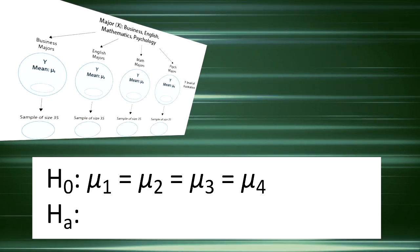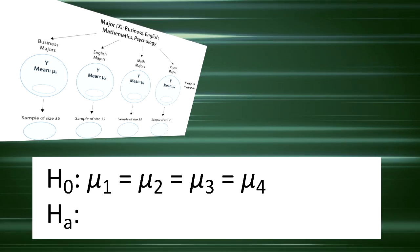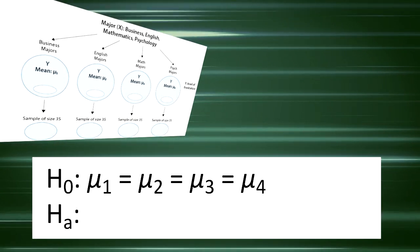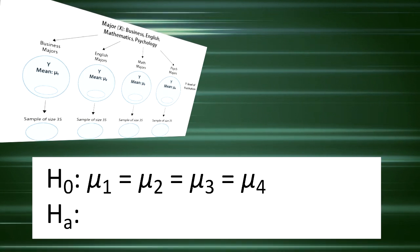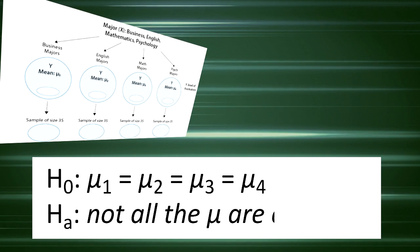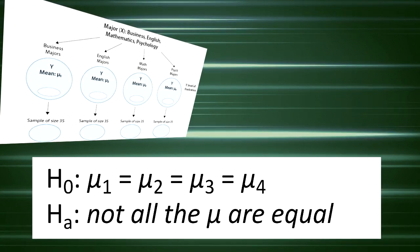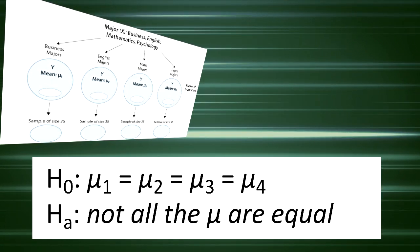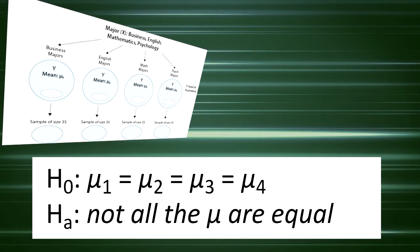Here, we have just one alternative hypothesis, which claims that there is a relationship between x and y, the explanatory and response variable. In terms of the means, it simply says the opposite, that not all of the means are equal, and we simply write h subscript a, not all of the population means are equal. There are many ways for the population means not to be equal, we'll talk about that later.